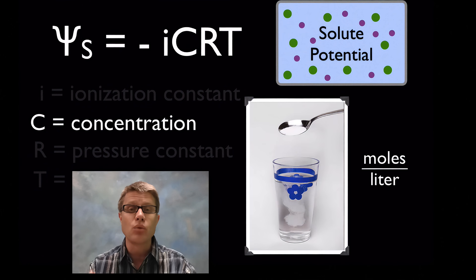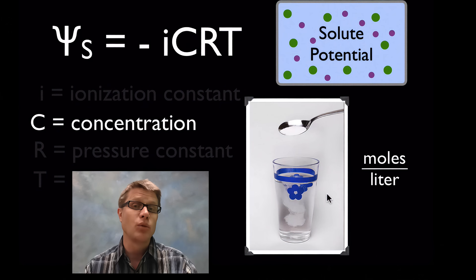What about concentration? Obviously the more of the stuff we add to the water that's going to decrease rather the solute potential. Moles per liter in concentration is going to be what we measure for C. So if you add the molarity, let's say something is a one molar solution, that means there's one mole per liter.